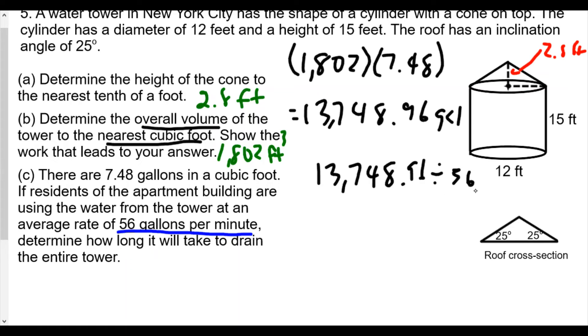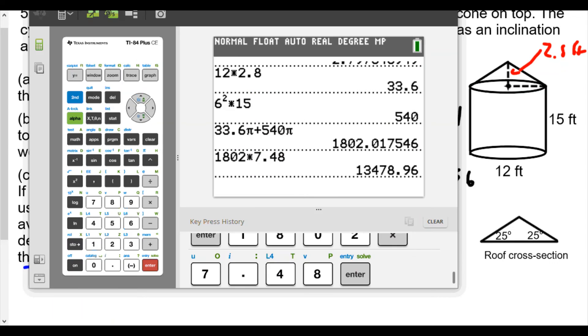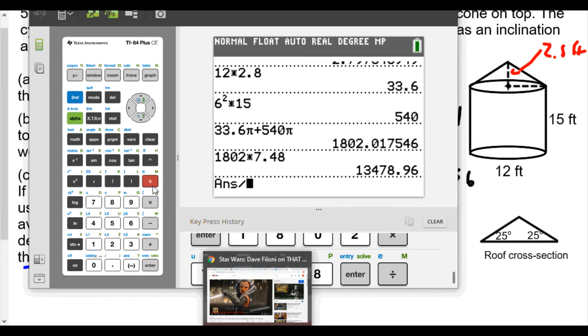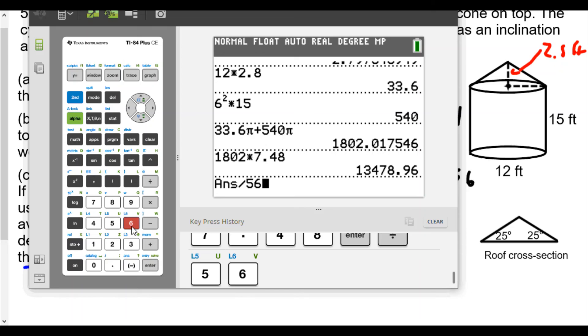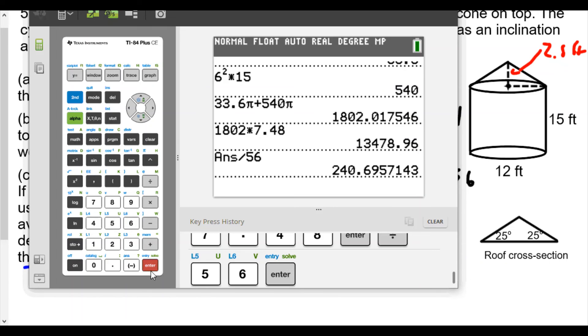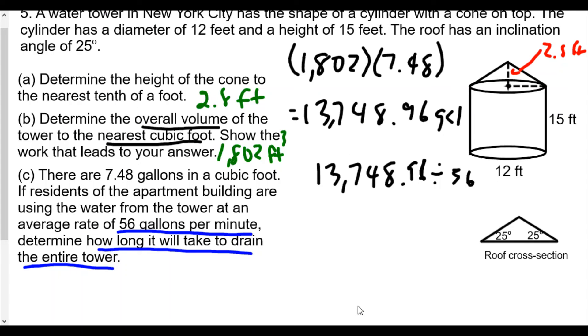We're going to take 13,478.96 and divide that by 56 to get the time in minutes. It doesn't ask to round off to the nearest minute, but we'll assume to the nearest minute. We take this value and divide by 56, and we get 240.69 minutes, which is approximately 241 minutes.